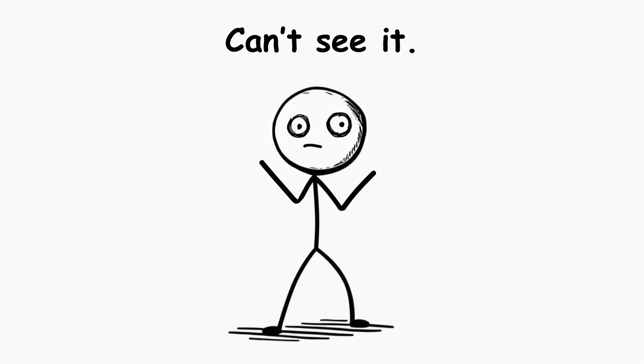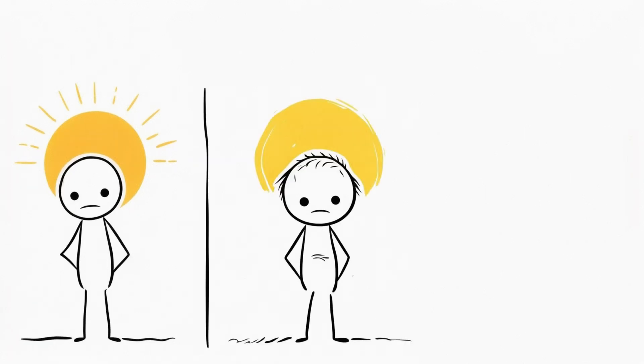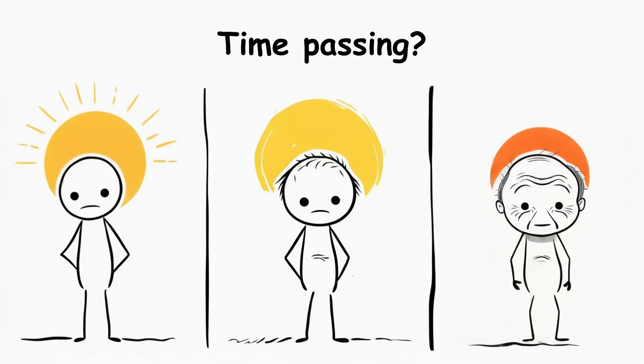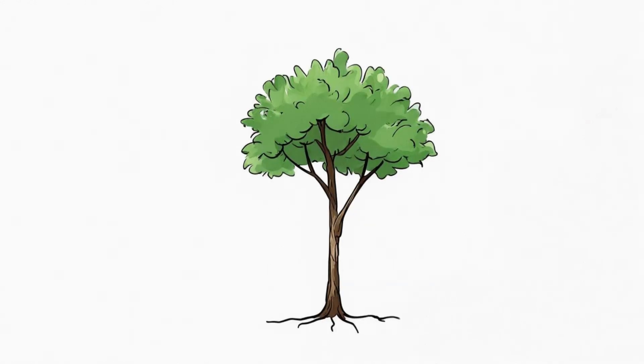We don't see time. We can't touch it. All we observe is change, a sequence of events. The sun rises and sets. We grow older. Objects decay. Maybe time is just a way of describing that something has become different.